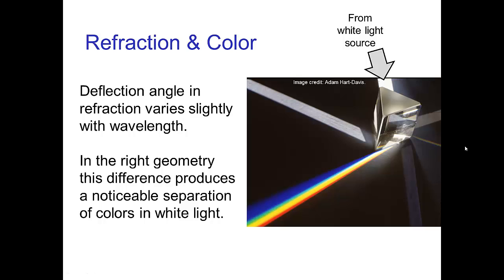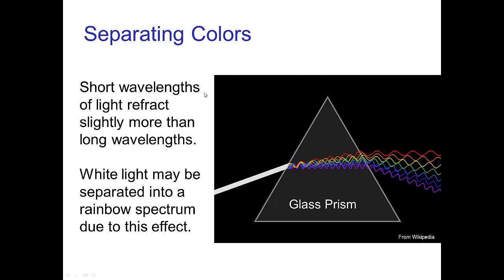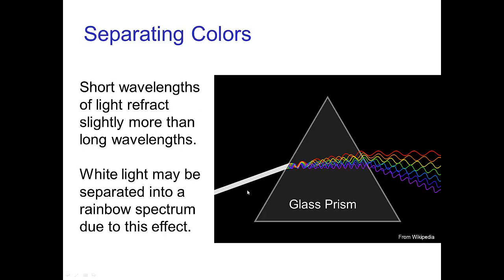One more property of refraction is that the deflection angle varies slightly with the wavelength of light, and we know that different wavelengths are perceived as different colors. It's not a large effect, but with the right geometry you can notice significant separation of colors of white light, as seen from a prism dispersing and revealing the spectrum. The short wavelengths — the blue side of the spectrum — refract slightly more than the long wavelengths, which are the red side of the spectrum, and this creates the separation of colors.